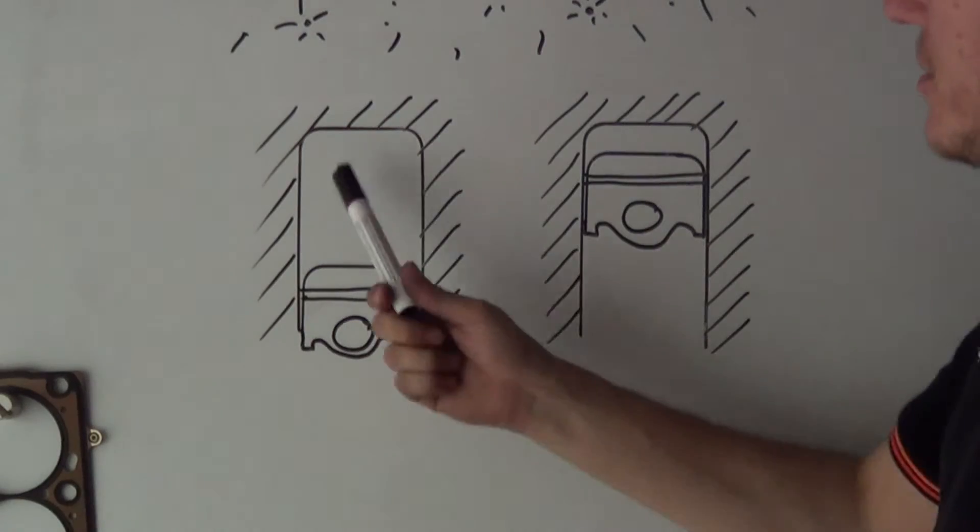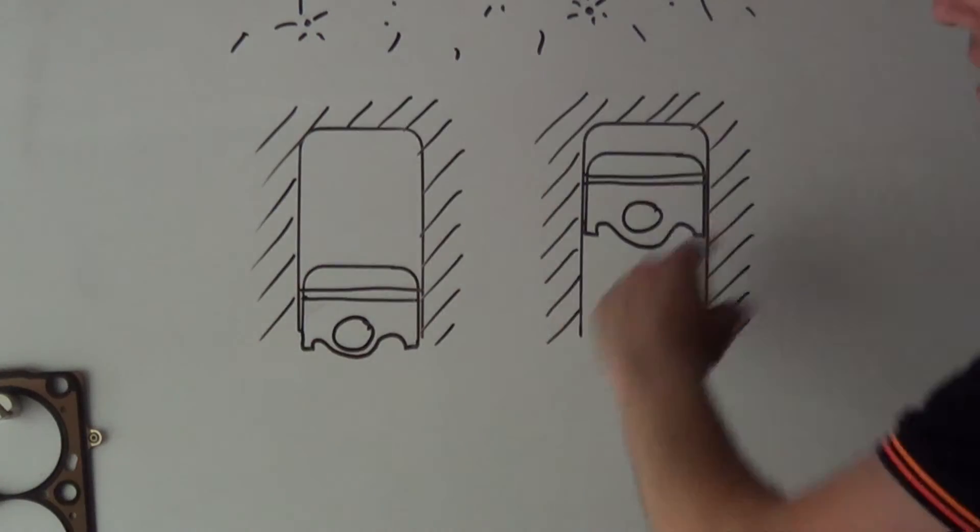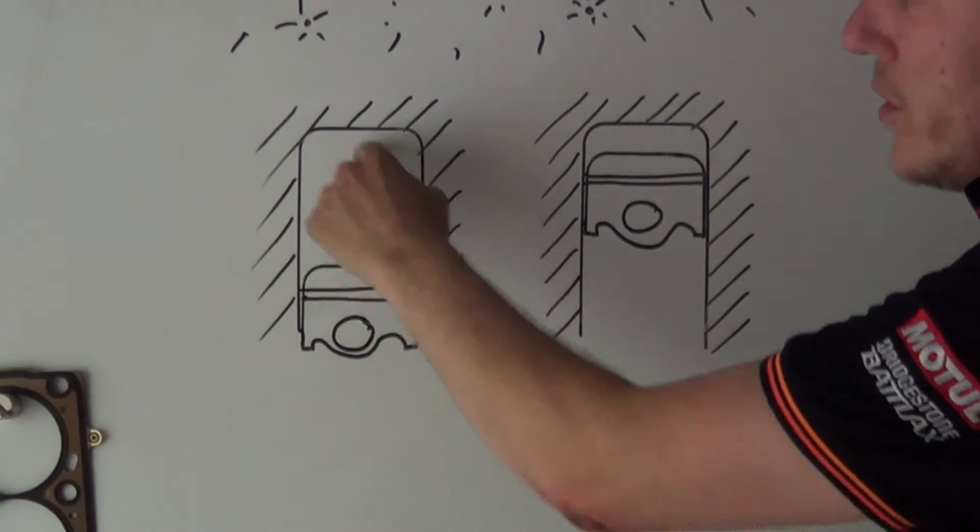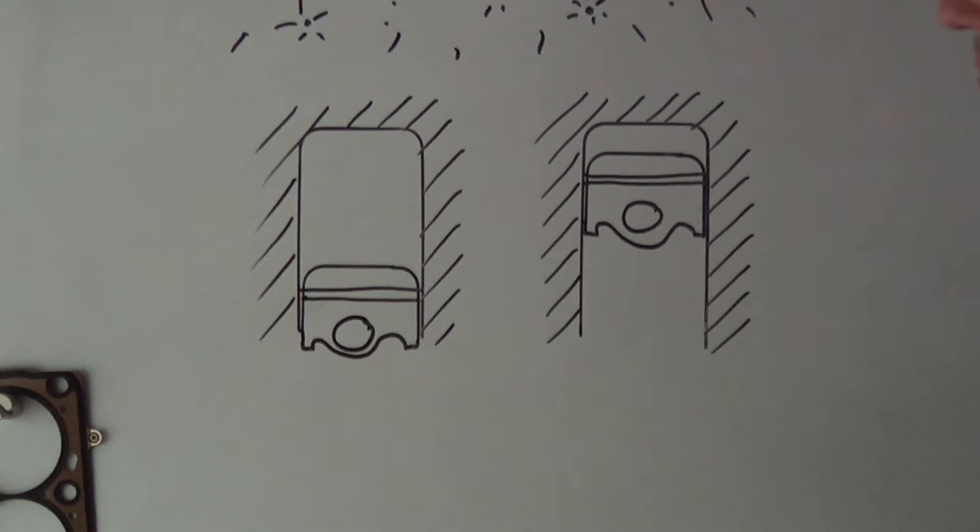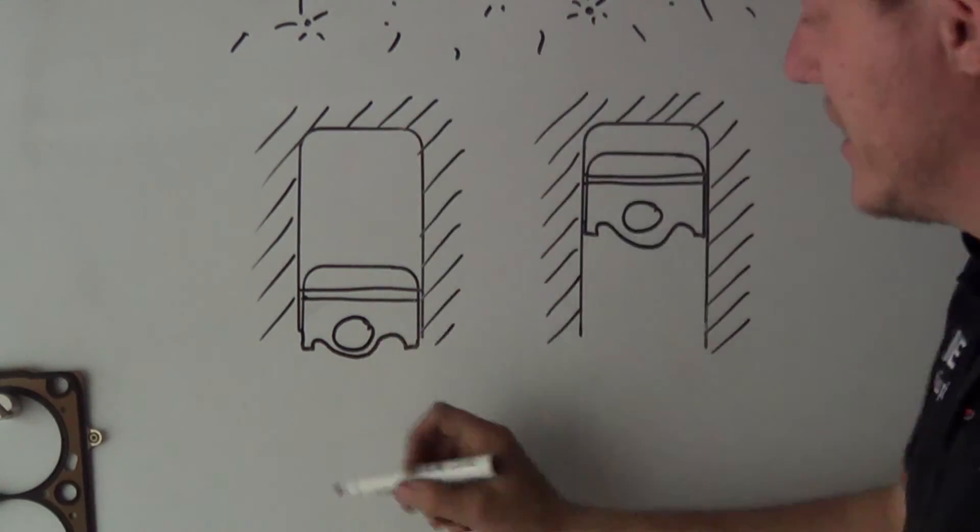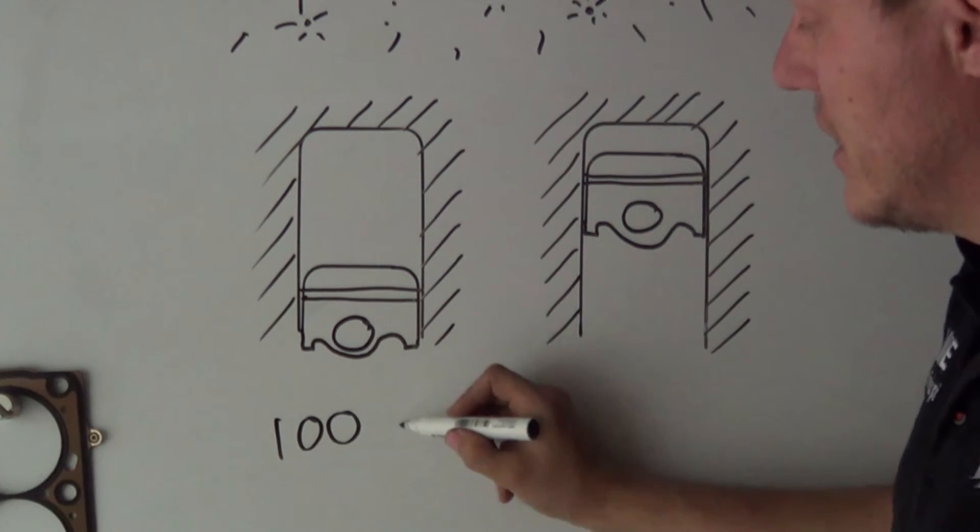So here I have two cylinders. Hatched out is your cylinder, this is your cylinder bore inside here, your volume. This is your piston and this is your piston, your other example.